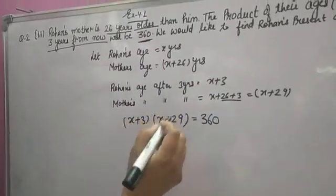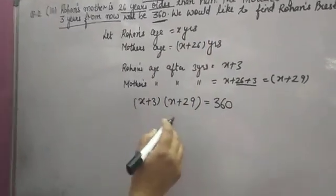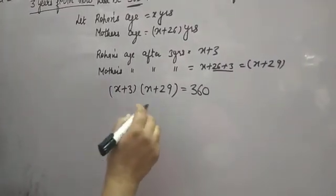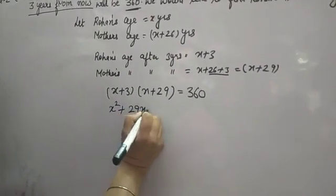What we would like to find is Rohan's present age, meaning you have to find X. But in this question, you only have to form the equation. But I'll show you how to solve ahead as well to find Rohan's age.